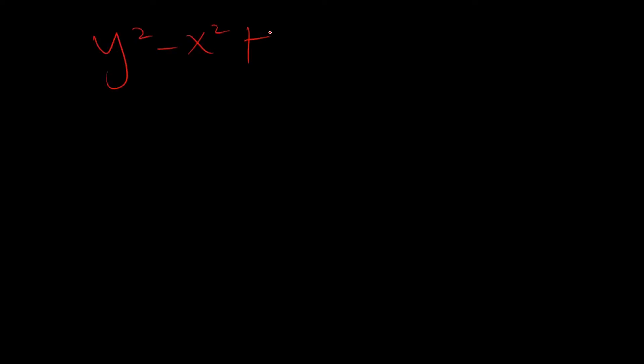Let's try another example: y² - x² + xy = 3. As mentioned, some implicit equations can be transformed into explicit form, but with this one it would be very difficult, or mathematically impossible, to make either variable the subject, because no matter how you substitute, you still end up with the same terms in the equation. So you cannot convert it to explicit form and must apply implicit differentiation.